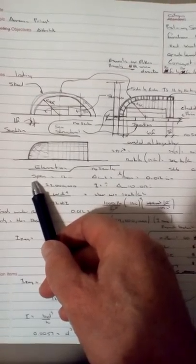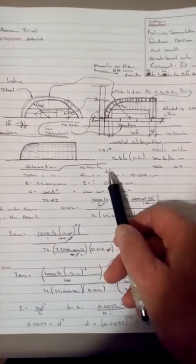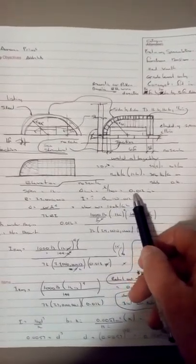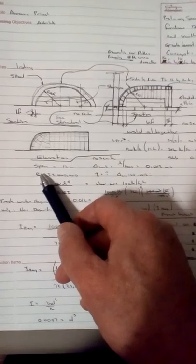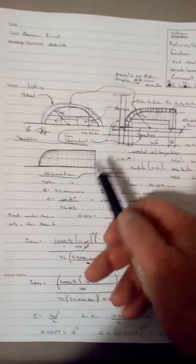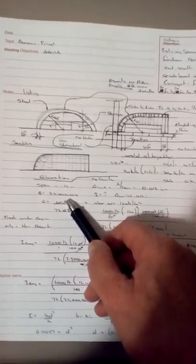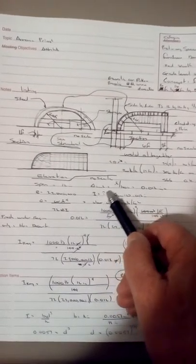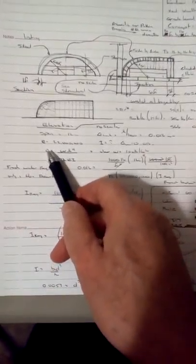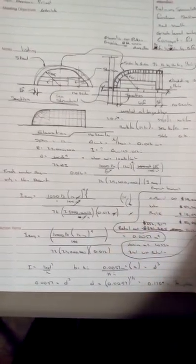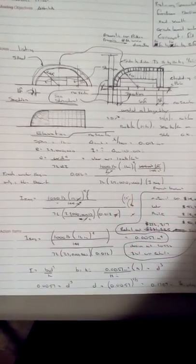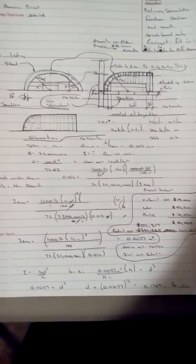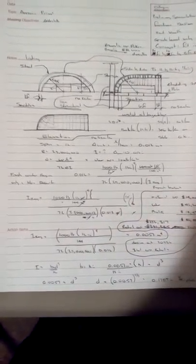In this condition, the span is 12 inches, the limit deformation is L over 1000, and that's 0.012 inches. The modulus of elasticity in steel is 29 million pounds per square inch. The question is what is the moment of inertia of the section. We can find that out by this equation: the delta limit is WL to the fourth over 12EI. The W is equal to 1000 pounds per square foot.